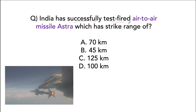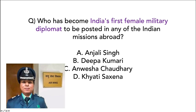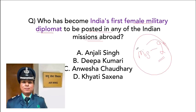India has successfully test-fired an air-to-air missile called Astra with a strike range of 70 kilometers. Bill and Melinda Gates honored PM Narendra Modi with the Global Goalkeeper Award. Who has become India's first female military diplomat posted in any Indian mission abroad? She has joined the Indian Embassy in Russia and is trained on MiG-29 fighter aircraft. Her name is Anjali Singh.